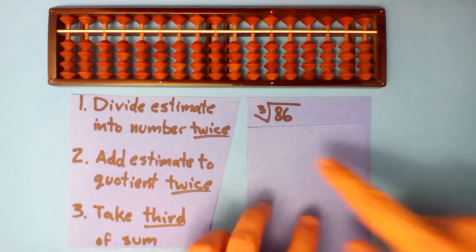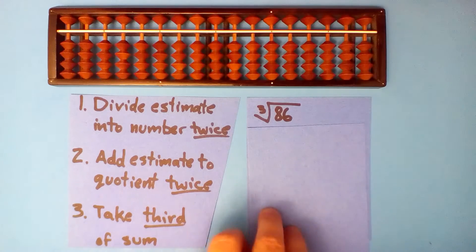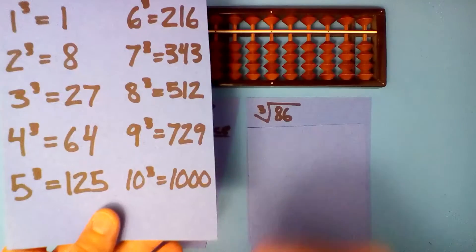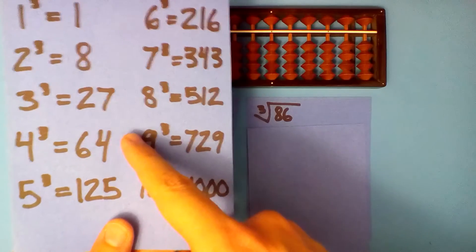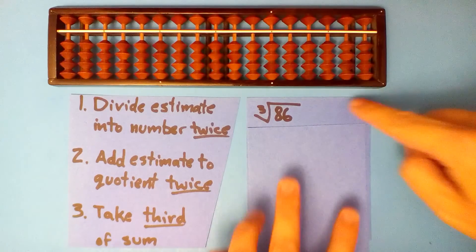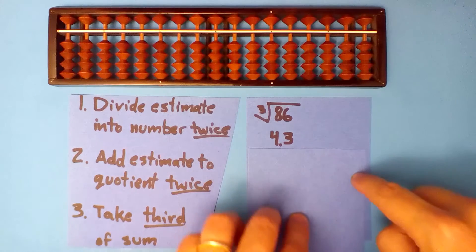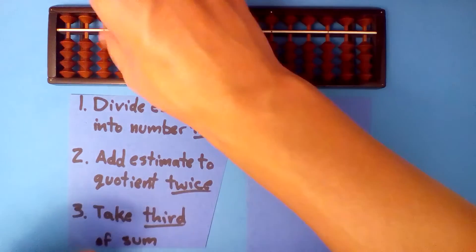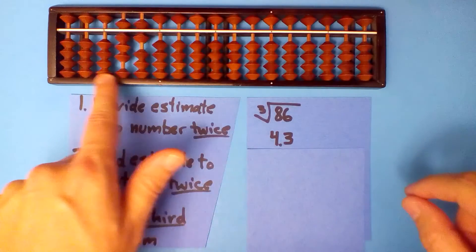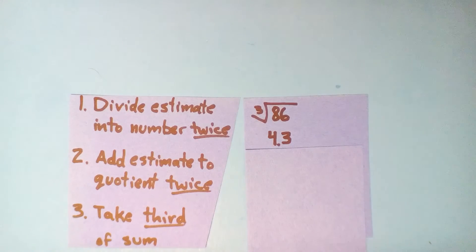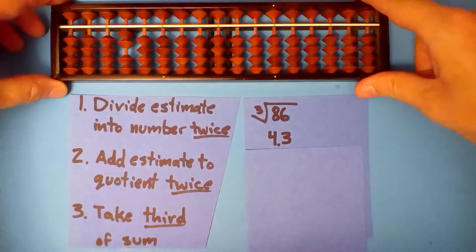Let's start some examples. What's the cube root of 86? We need to know our cubes — what cube is about 86? It's between 4 and 5, so let's say it's 4.3. We need to divide 4.3 into 86. Pause if you need to.